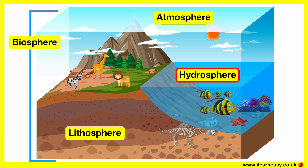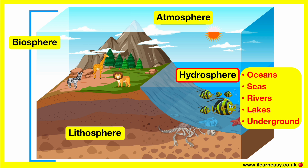Hydrosphere. The hydrosphere is the water sphere of Earth. Water covers about 71% of the Earth's surface. This includes all the water found on Earth's surface, including in oceans, seas, rivers, lakes, water underground and even the water in the air. This water can be found in different forms, such as liquid, solid or vapour.